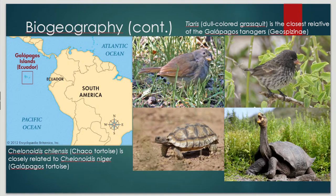This is basically the example of biogeography that kicked off the whole field — the Galapagos, an archipelago near Ecuador. The closest mainland to the Galapagos is Ecuador, which by no means is close. The Galapagos has only been around for about 5 million years, so these are all relatively recent evolutionary radiations.